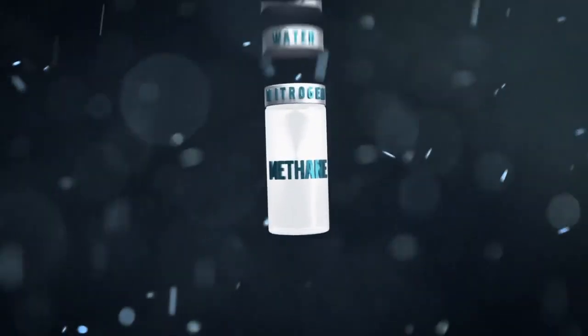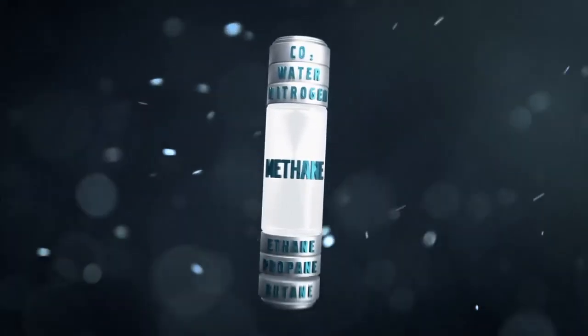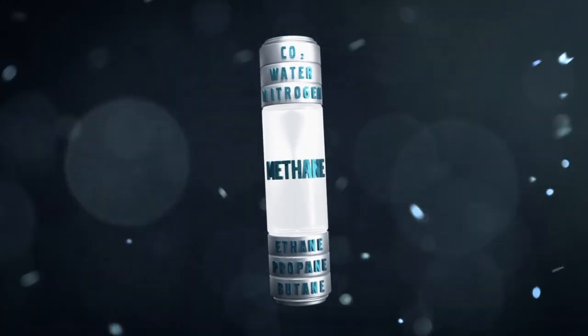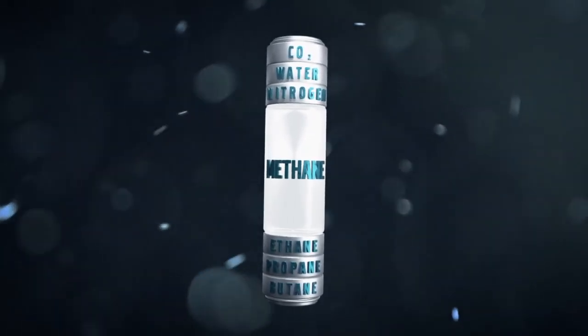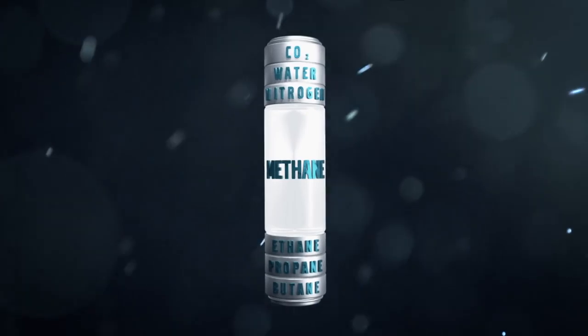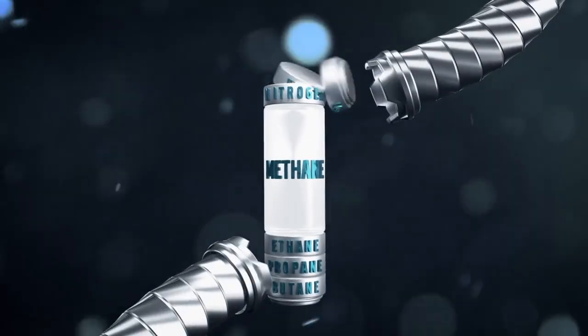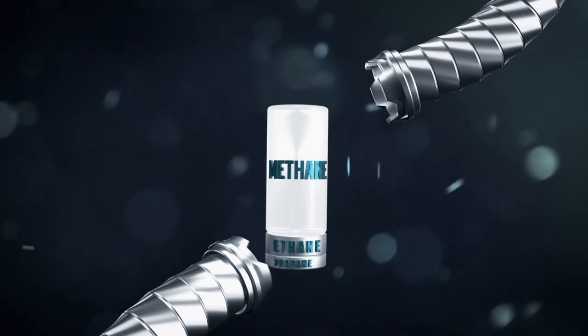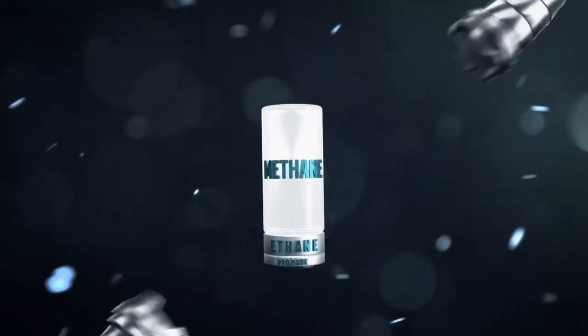Natural gas comprises mainly of methane but also small amounts of ethane, propane, butane and non-combustibles. When converting the natural gas into fuel like LNG, these impurities are removed and can be used for other purposes such as fertilizers or plastic products.